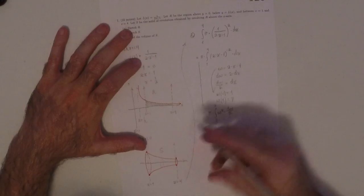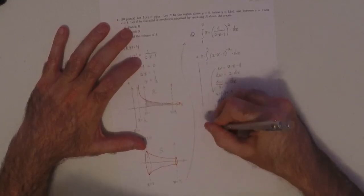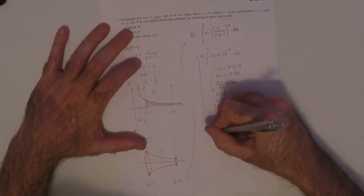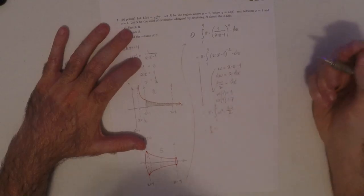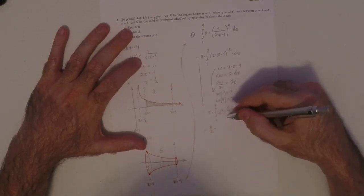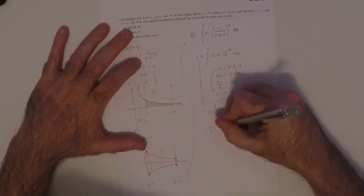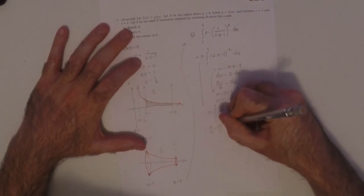All right. So then that division by 2, that can just be factored out. So pi over 2. And then, w squared, its anti-derivative is w cubed over 3. It's evaluated from 1 to 7.